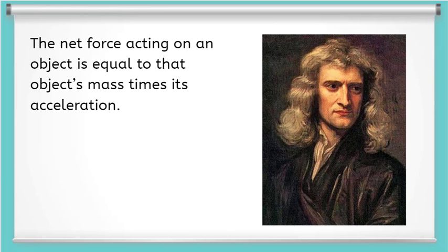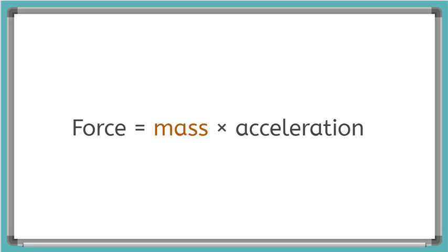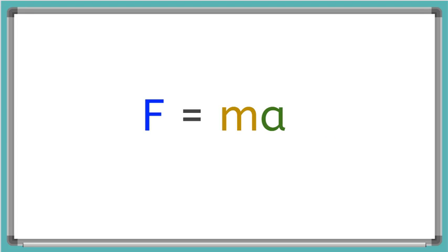This relationship is what Sir Isaac Newton declared as his second law of physics. He said the net force acting on an object is equal to that object's mass times its acceleration. The force is the magnitude of the unbalanced force acting on the object, the mass is the object's mass in kilograms, and the acceleration is how fast the object is changing its velocity. We often write this in shorthand as F equals MA.